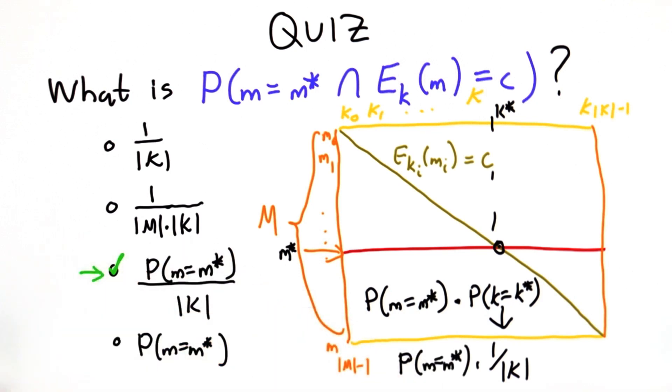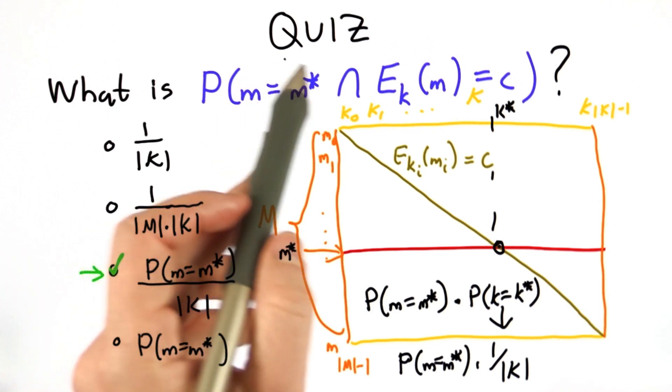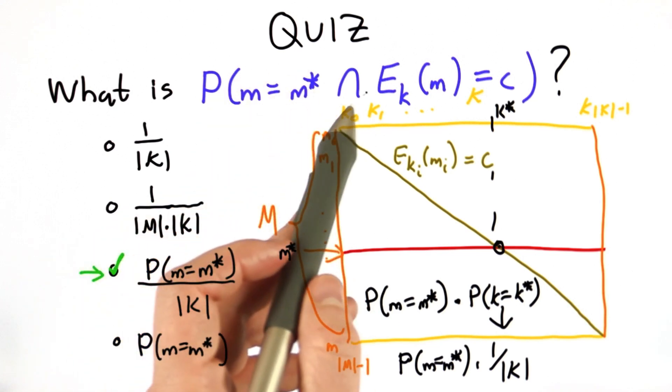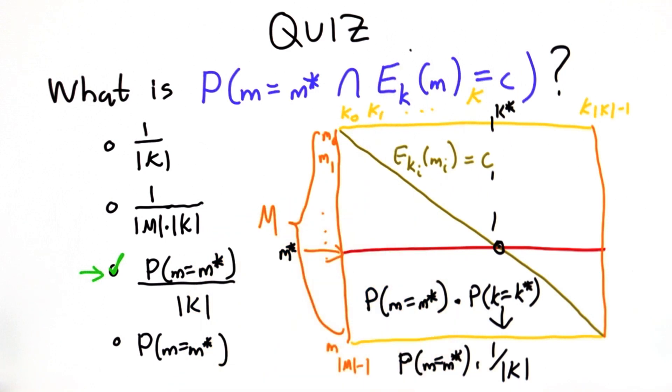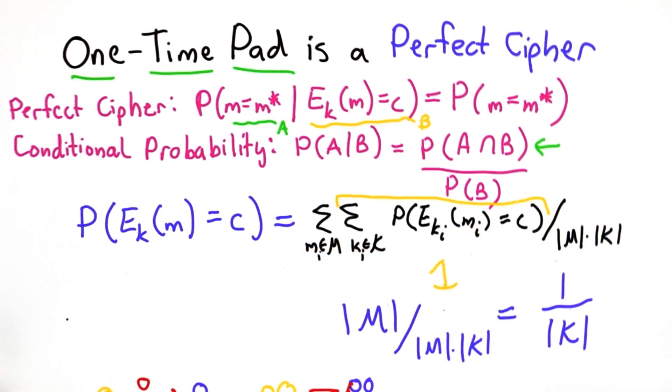So that's why this is the answer to the probability that the message of M star intersected with the encryption of the message is C. So now let's go back to our definition.